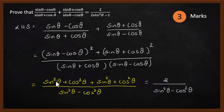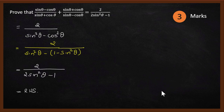Using the identity sin squared theta plus cos squared theta equals 1, the numerator becomes 1 plus 1, which equals 2. So we already have 2 in the numerator, which is what we want. The denominator is sin squared theta minus cos squared theta, and we want 2 sin squared theta minus 1 on the right-hand side.